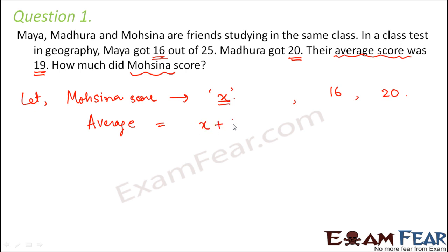So what would be the sum? X plus 16 plus 20 divided by how many of them are present? 3. Maya, Madhura and Mohsena. So this divided by 3. But according to the question, this average is actually 19. So that means X plus 16 plus 20 divided by 3 is equal to 19. So this is our equation.